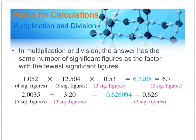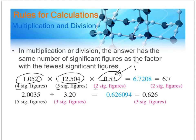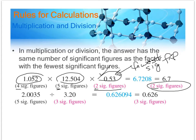For multiplication and division, instead of counting digits to the right of the decimal, you count total significant figures in each number being multiplied or divided. The number with the fewest sig figs determines how many sig figs your answer has. If you have numbers with 4, 5, and 2 sig figs, your answer can only have 2. Your calculator might spit out 6.7208, but since we can only use 2 significant figures, the correct answer is 6.7.